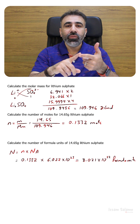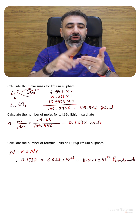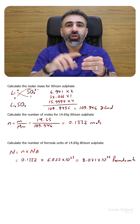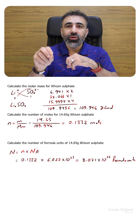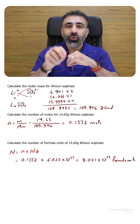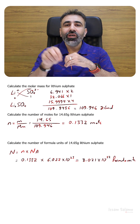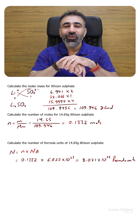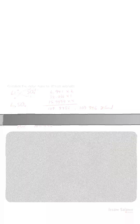So whenever we want to calculate the number of particles — atoms, molecules, ions, or formula units — we use Avogadro's number, which is equal to 6.022 times 10 to the power 23.